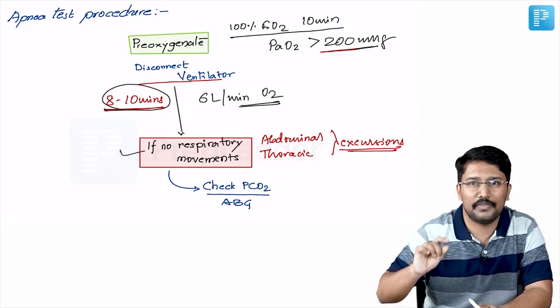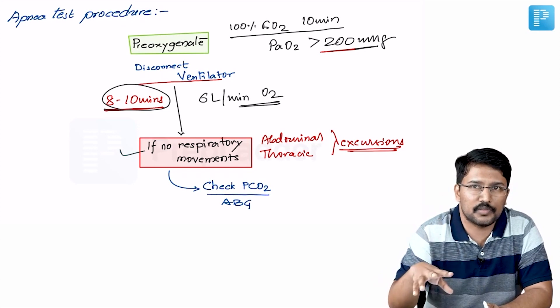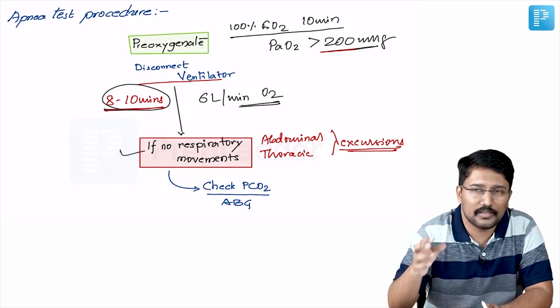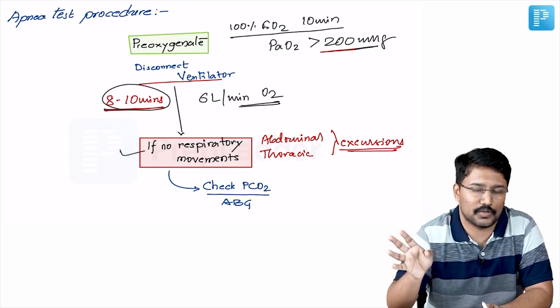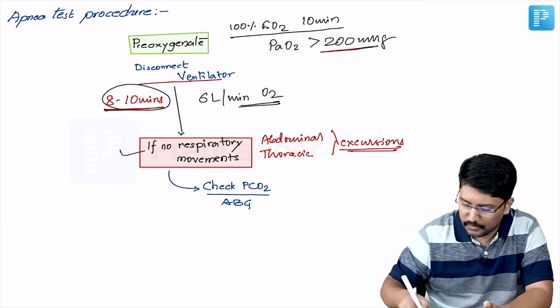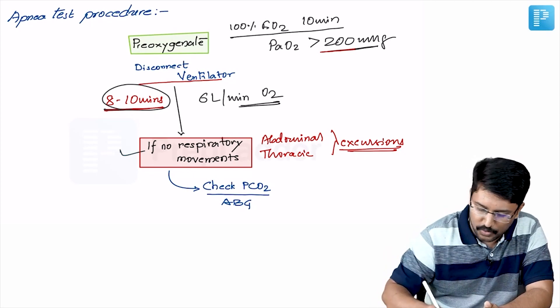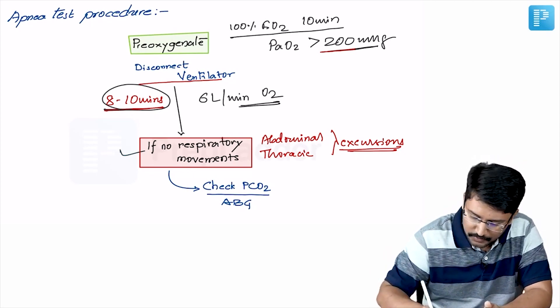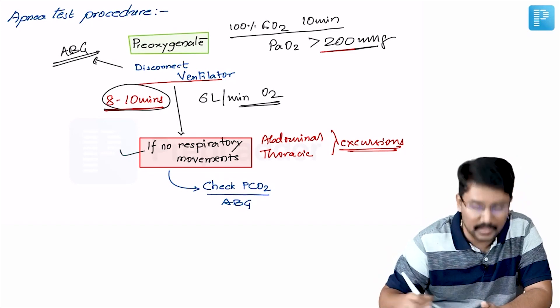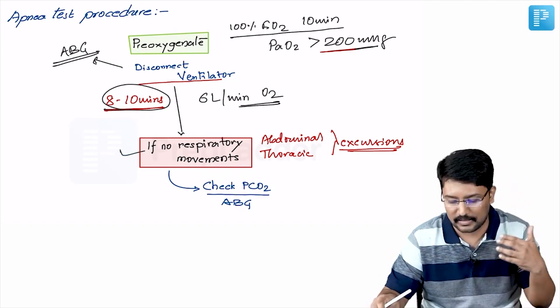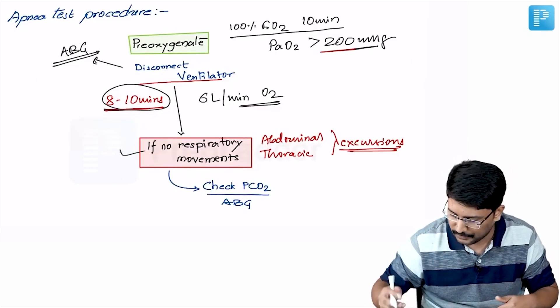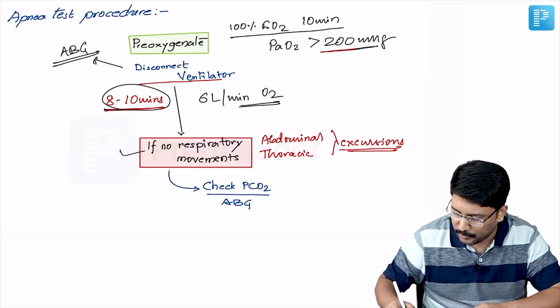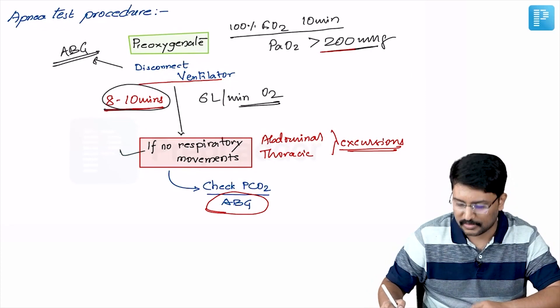Then comes the question, did we actually stimulate the respiratory center during this period? And for that, we need to see what is the PaCO2 at carbon dioxide level. To start with before we disconnect the ventilator, we should have got another one ABG done here for a baseline PaCO2. And as defined earlier, we should have this range to start with. And once the test is completed, we will repeat ABG again and check the PaCO2.